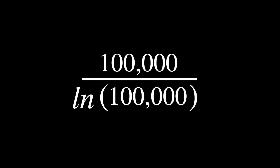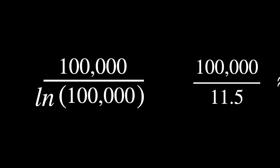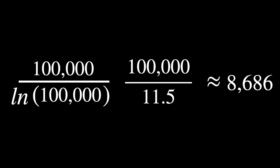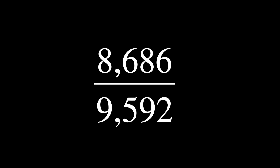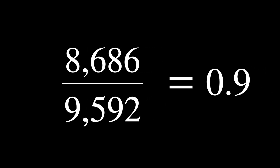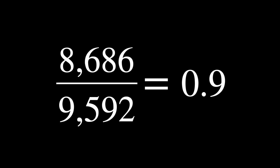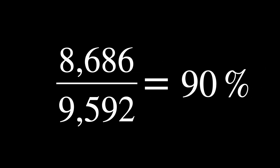For 100,000, the answer is 8,686. The actual number, though, is 9,592. So if we take the percentage of that, we have 0.9, or 90%. In fact, the higher n is, the better the approximation.